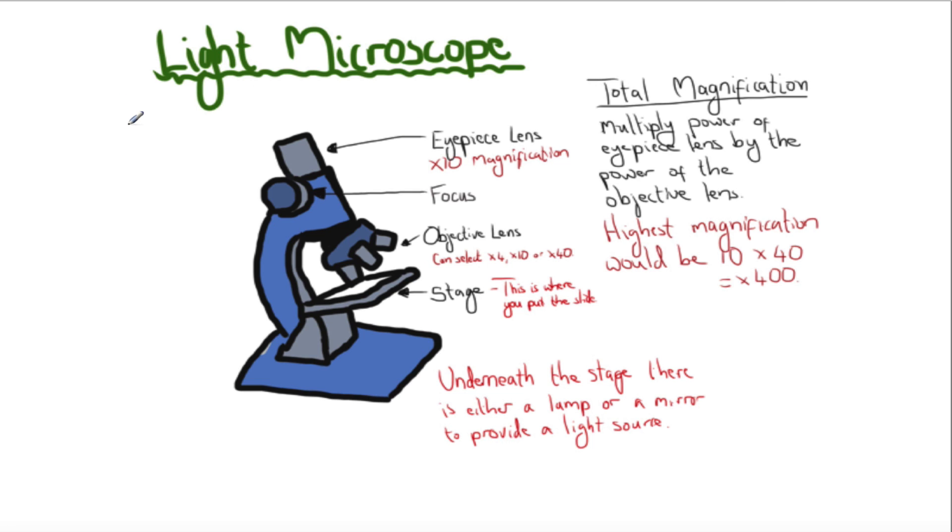The structures we've looked at with plant and animal cells are known primarily through the light microscope, also known as a compound microscope because we have two lenses: the eyepiece lens and an objective lens. You can normally select one of three objective lenses, quite often times 4, times 10, and times 40 magnification.